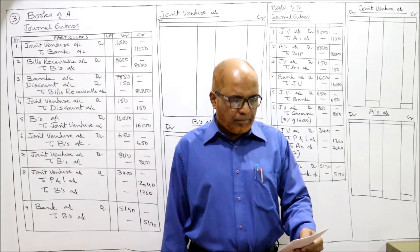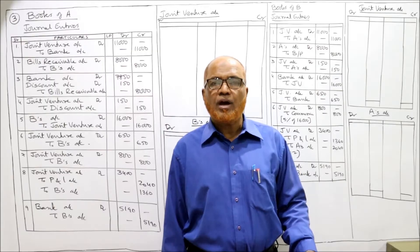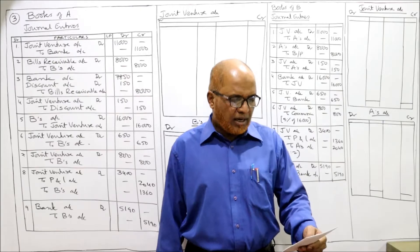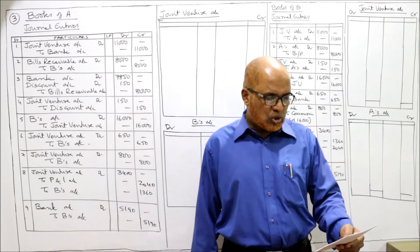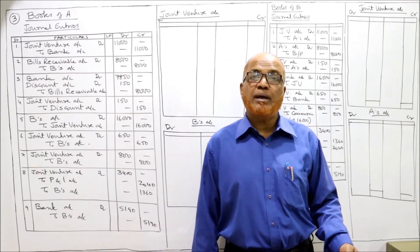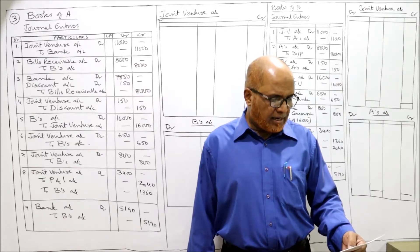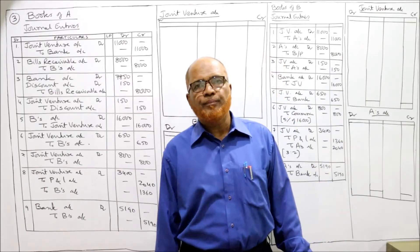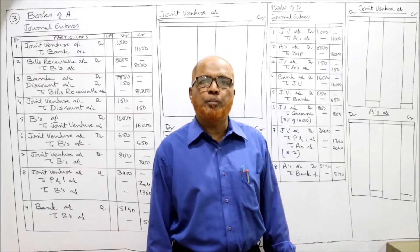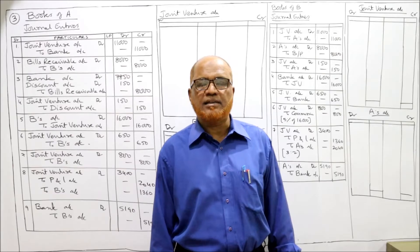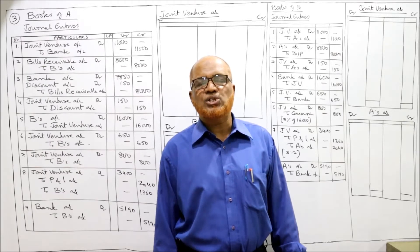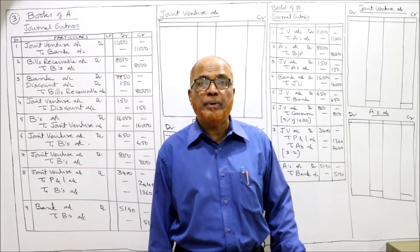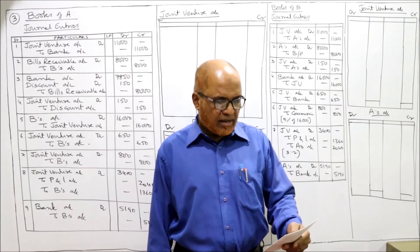B sold the timber for 16,000. B had to spend 350 for fire insurance and 300 for rent - these are the expenses paid by B. Under the agreement, B is entitled to a commission of 5% on sales. Sales are 16,000, so 16,000 into 5% equals 800 rupees commission payable to B.